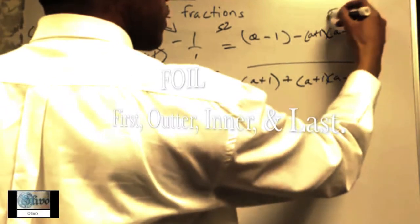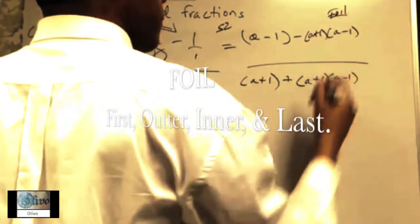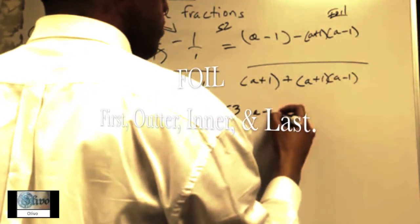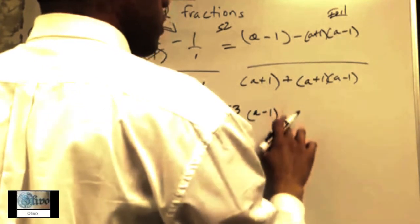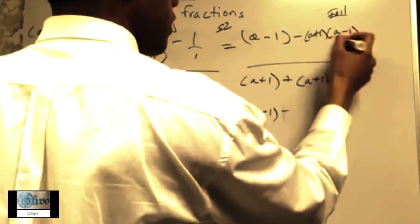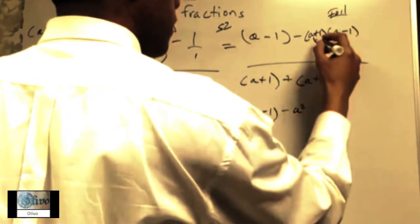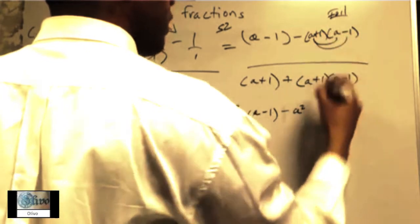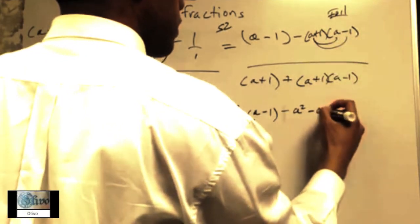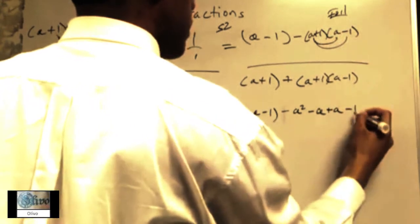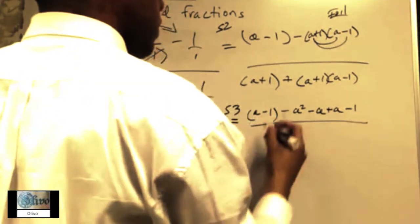When you simplify this here, you use the FOIL method. So you're going to get a-1 minus—and you use the FOIL method—you get this times this, that's a², first; outer, that's -a; inner, +a; and last, -1.